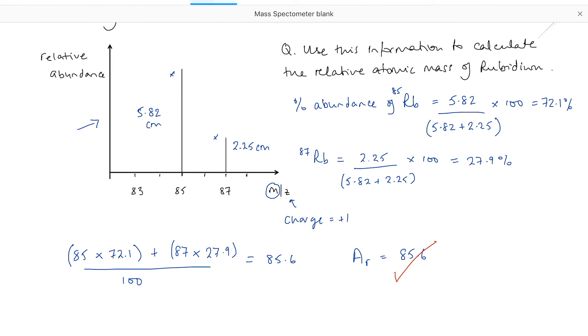All we've done is we've used the height of each peak to work out the percentage abundance. We've done that for each isotope individually, and then we've plugged it into the expression we used at GCSE, which is just the mass times percentage abundance for each isotope added together divided by 100.